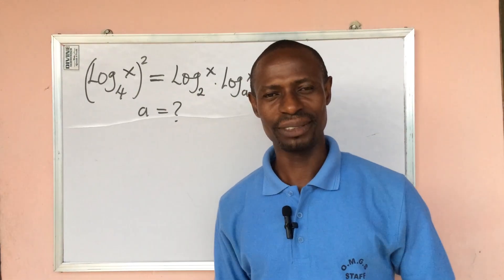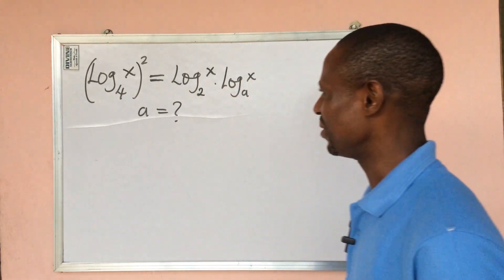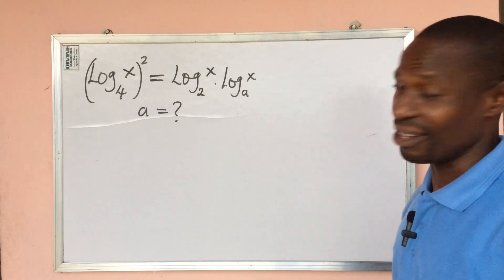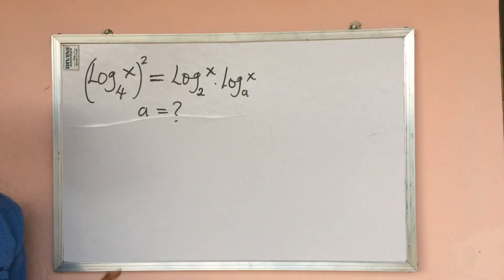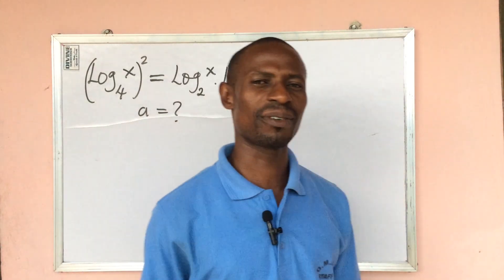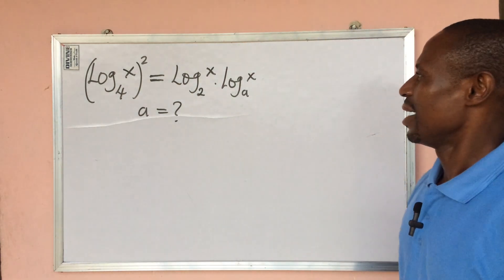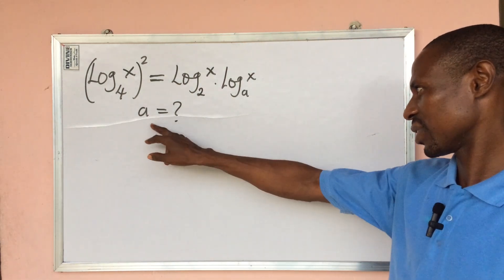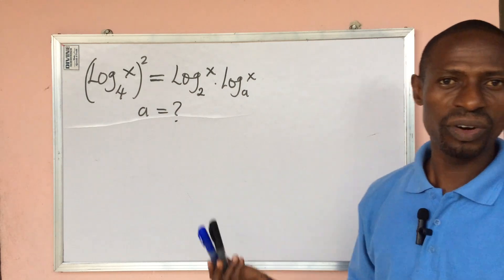Welcome everyone to my channel again. Today we have a logarithm equation where we have two variables. How do you solve for these two unknowns? Here we are asked to solve for only one variable.